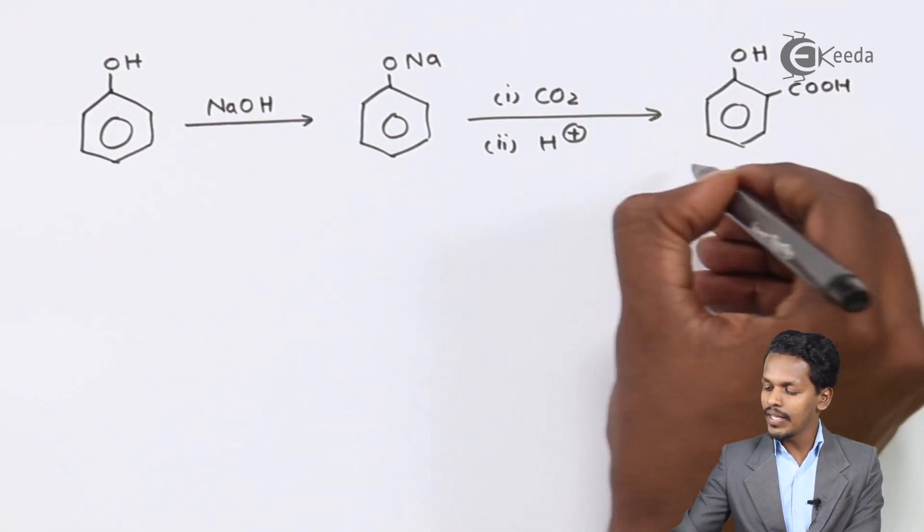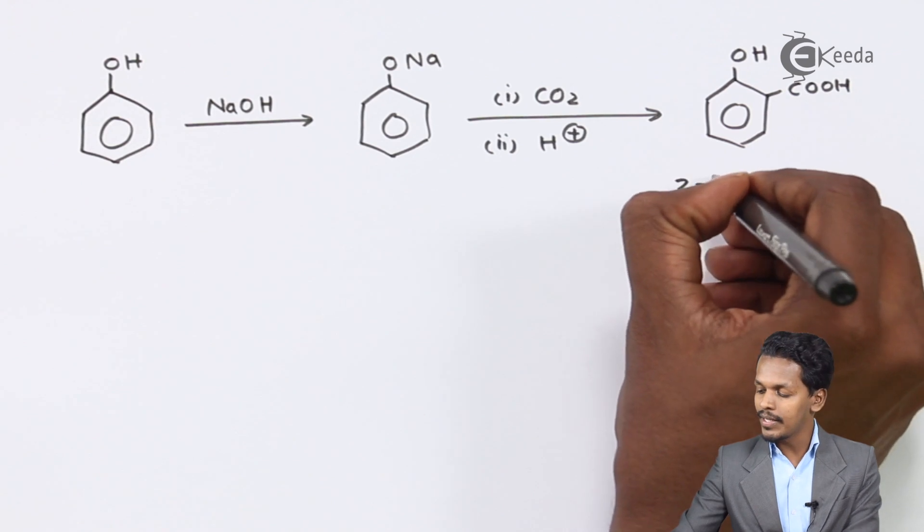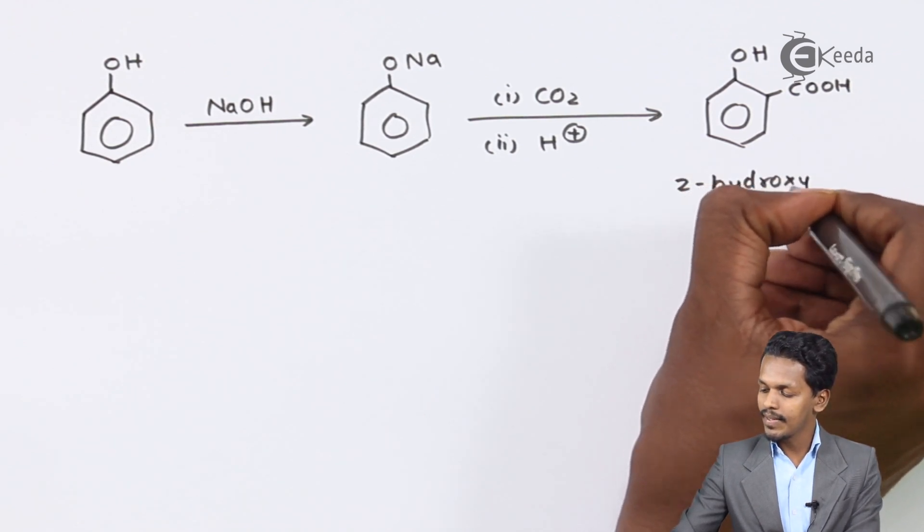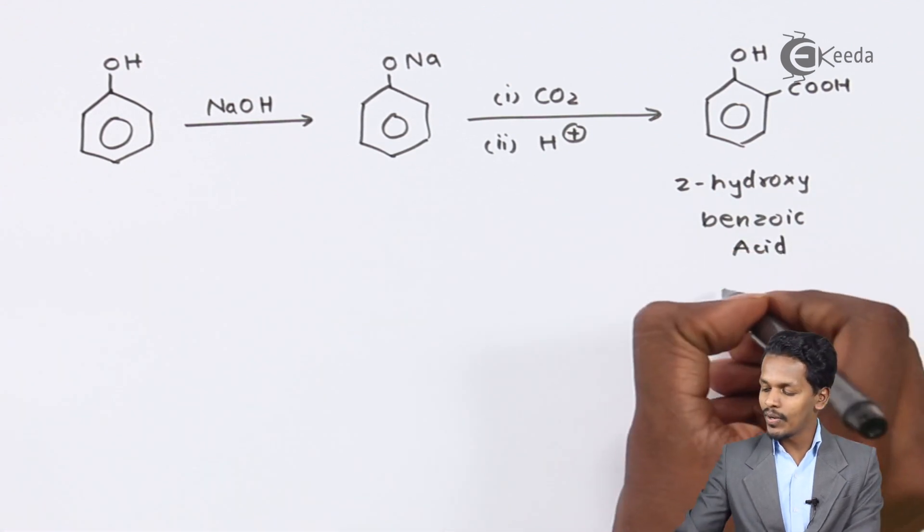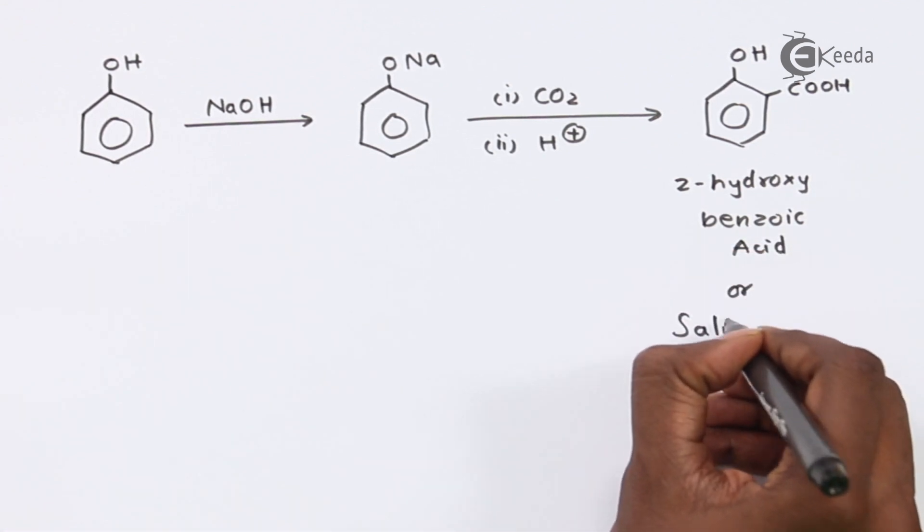So this is the product that we have obtained over here and the name of the product is nothing but 2-hydroxybenzoic acid. This is also commonly known as salicylic acid.